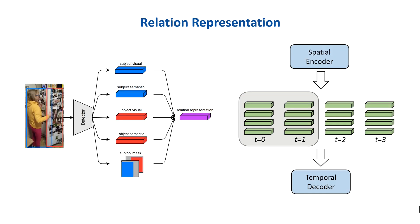A relation representation provided by the object detector includes the subject visual feature, subject semantic vector, object visual feature, object semantic vector, and the subject object location information.